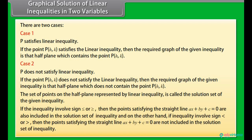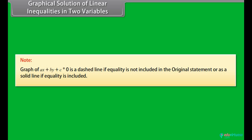If the inequality involves the sign less than or equal, or greater than or equal, then the points satisfying the straight line Ax plus By plus C equals 0 are also included in the solution set. On the other hand, if the inequality involves the sign less than or greater than, then those points are not included in the solution set. Note: the graph of Ax plus By plus C equals 0 is a dashed line if equality is not included in the original statement, or a solid line if equality is included.